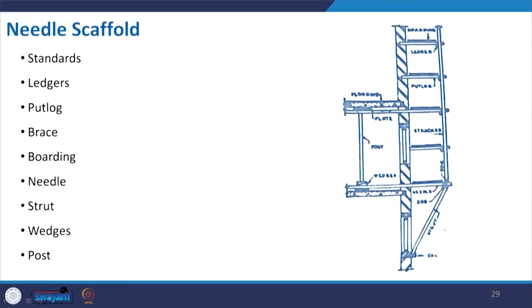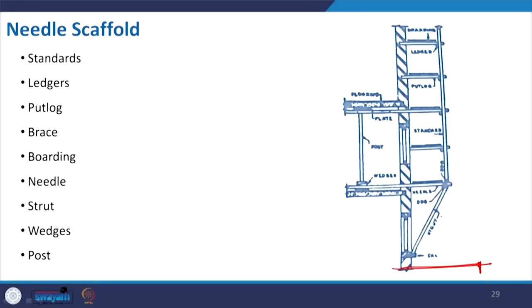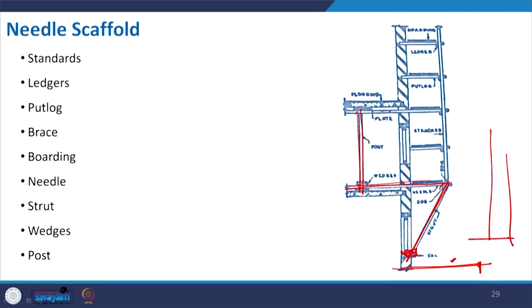Needle scaffold is something different — where you cannot access the ground because of a busy road, and something needs to be done at the top. Instead of making something from the ground at unnecessary cost and complexity, large needles are inserted into the structure, given support with props, fixed at an angle with the sill level, and then scaffolding is made for repairing the upper structure. It has no connection with the ground, unlike the other categories discussed. The purpose is to make corrections at the top without hampering daily life at ground level.